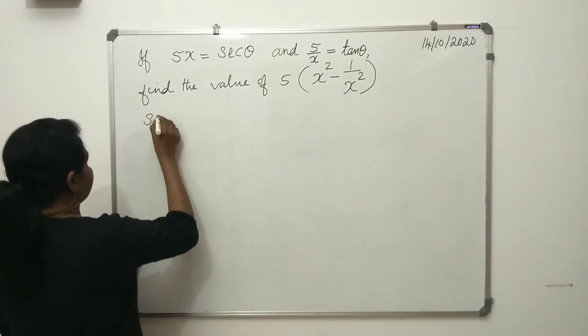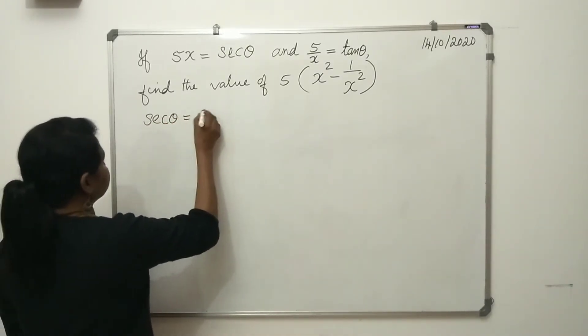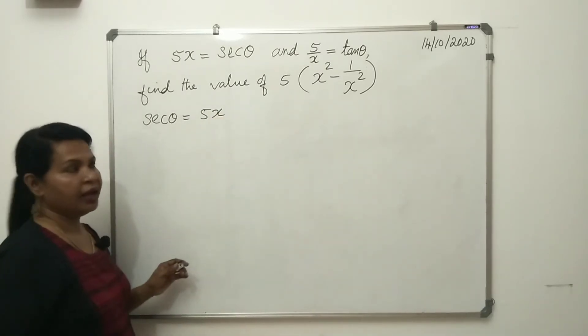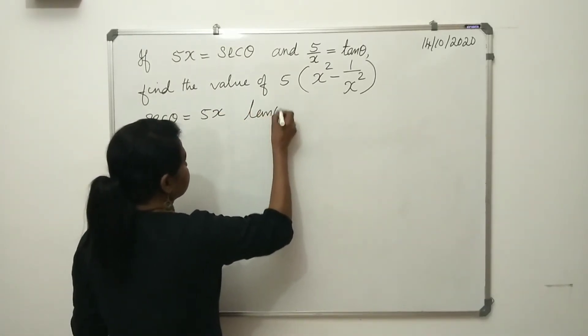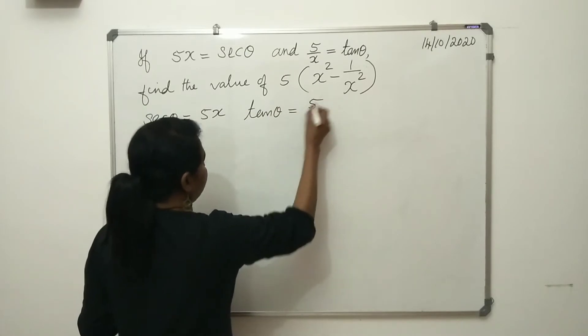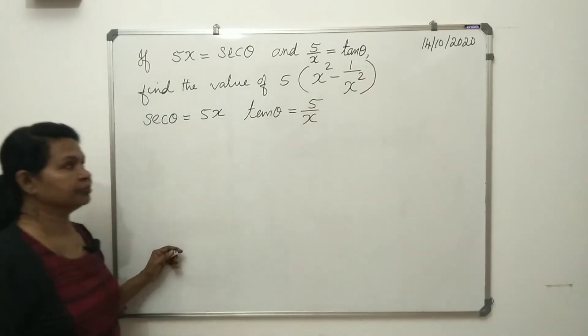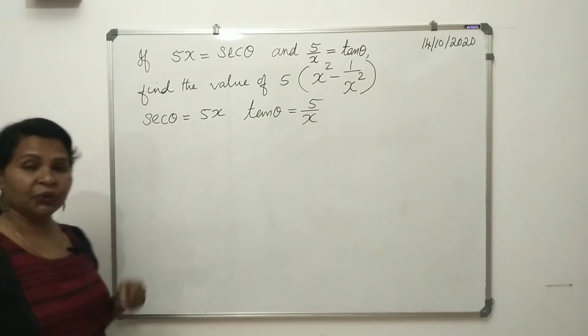We have secθ equal to 5x and tanθ equal to 5 divided by x. But we know the identity: 1 plus tan²θ equals sec²θ.